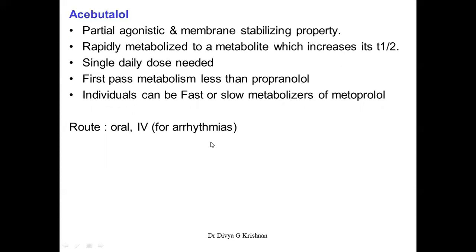Acebutolol has additional partial agonistic and membrane-stabilizing properties. It is rapidly metabolized to an active metabolite, which increases its half-life, so only a single daily dose is required. First-pass metabolism is less than propranolol, and similar to metoprolol, patients can be fast or slow metabolizers. The route is oral or IV for arrhythmias.